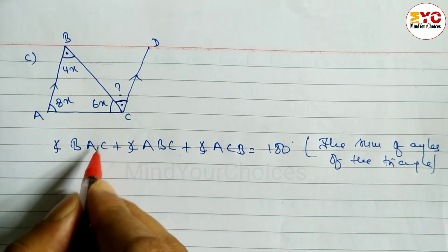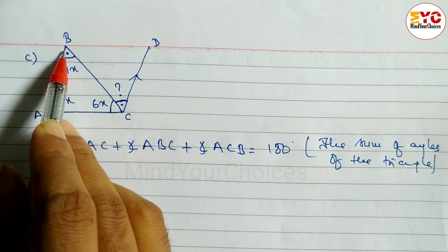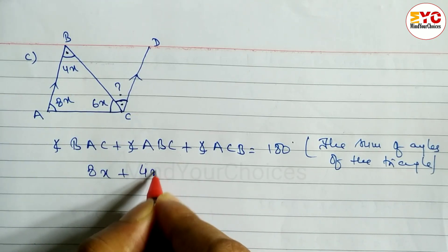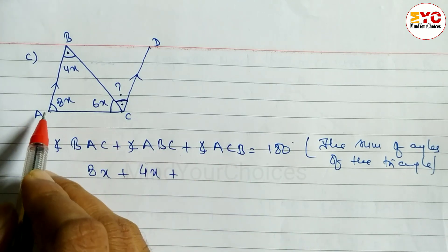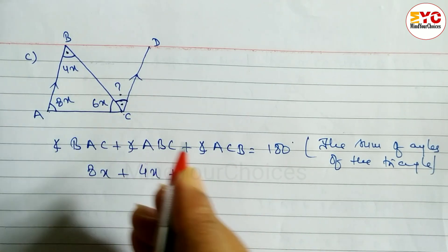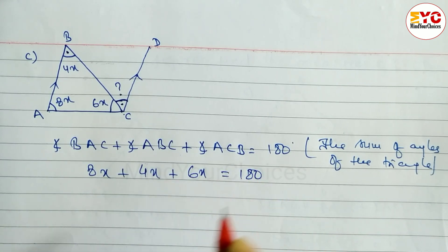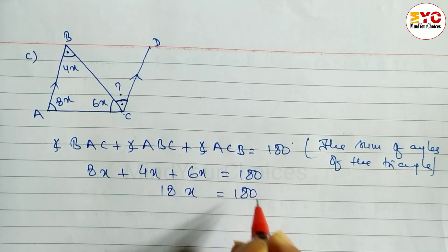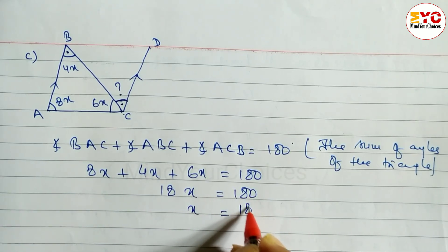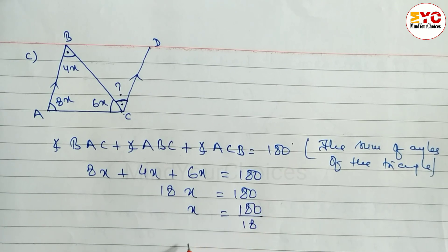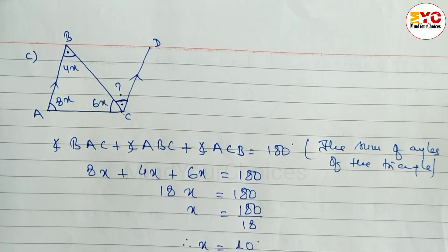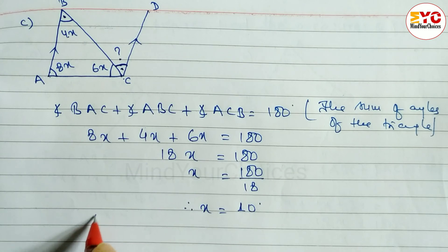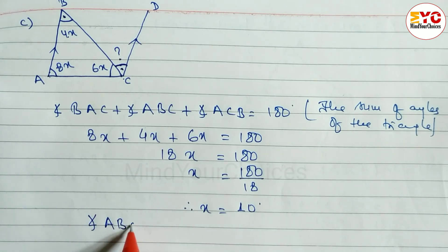Angle BAC is 8x, angle ABC is 4x, and angle ACB is 6x. So: 8x + 4x + 6x = 180 degrees. Adding: 6 + 4 + 8 = 18, giving 18x = 180. Therefore x = 180 ÷ 18 = 10.